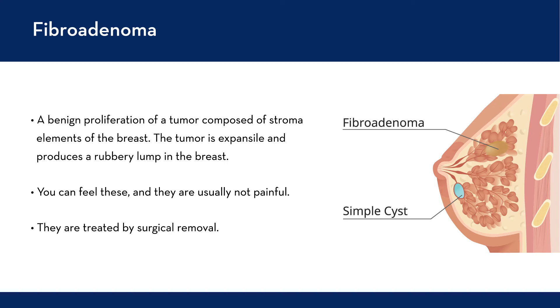There are a variety of benign tumors that can afflict the breast. One is fibroadenoma — essentially a benign proliferation of a tumor composed of stromal elements of the breast. These are the fibroblasts and glandular elements that become organized in a round way, so the tumor is expansile and grows, producing a rubbery mass or lump in the breast. You can feel these — they're mobile, usually non-painful, but sometimes tender, and they're treated by surgical removal. Before surgery is considered, certain diagnostic procedures may be undertaken, including imaging studies with ultrasound or MRI analysis of the breast.